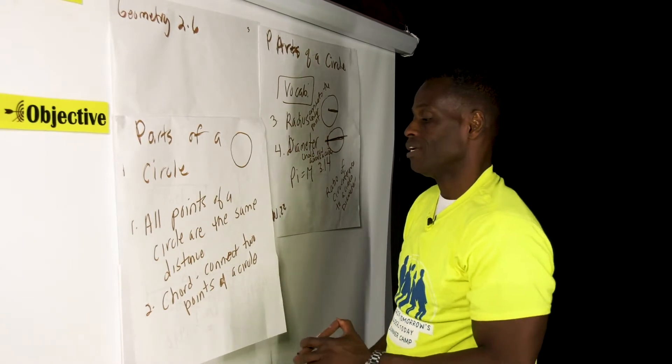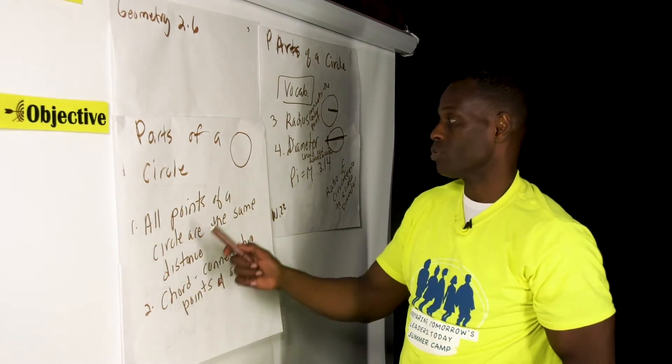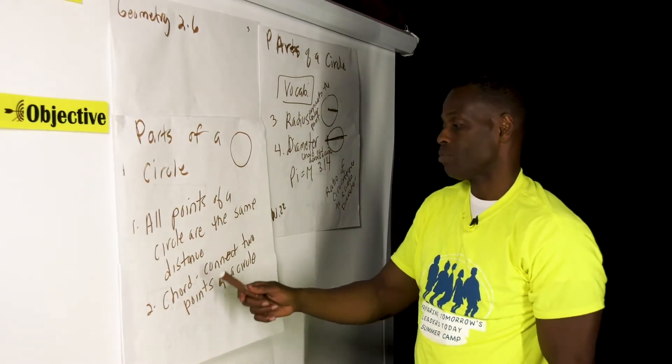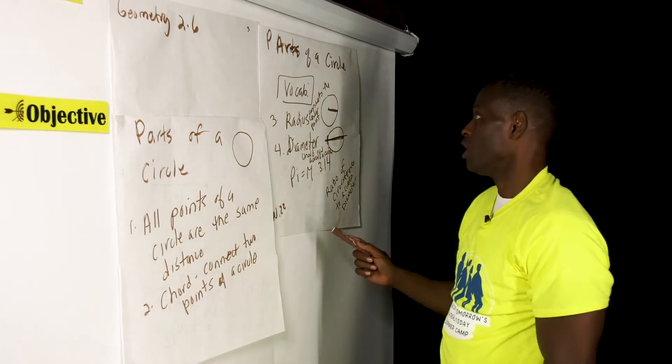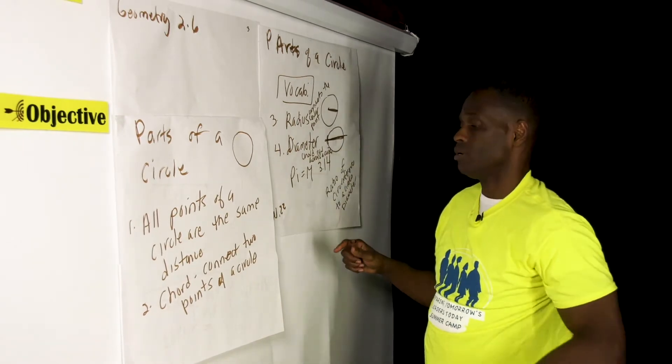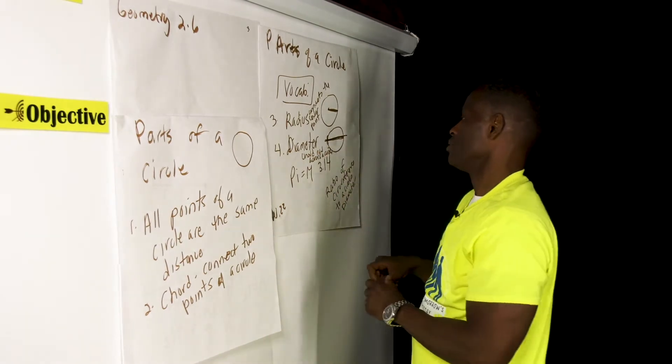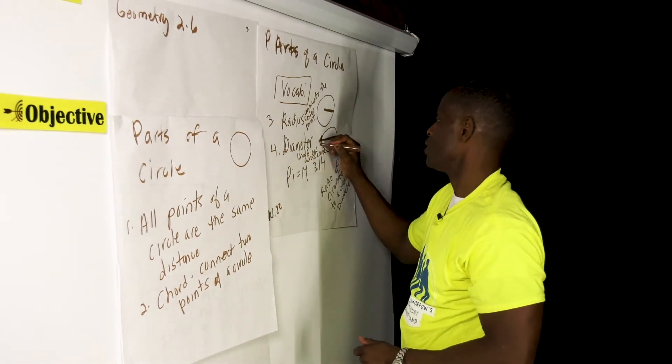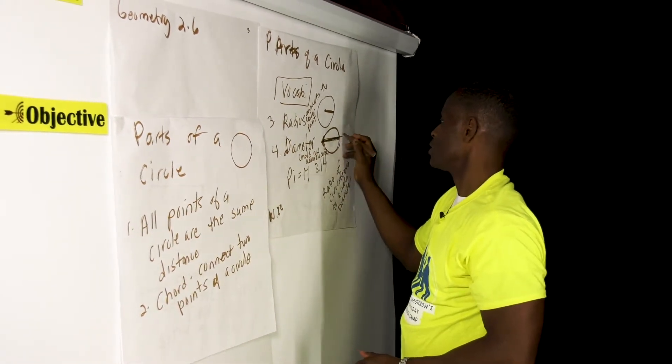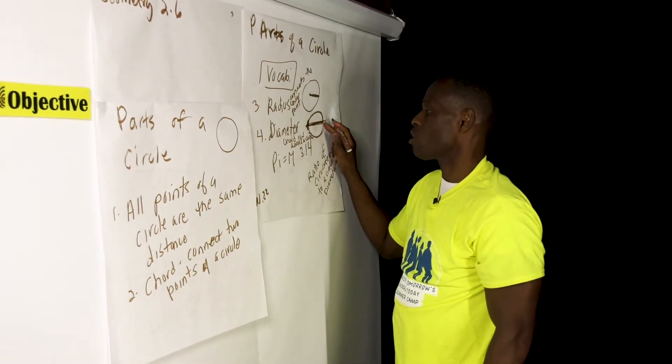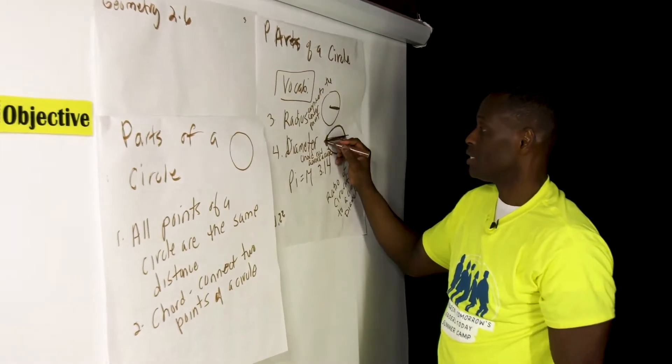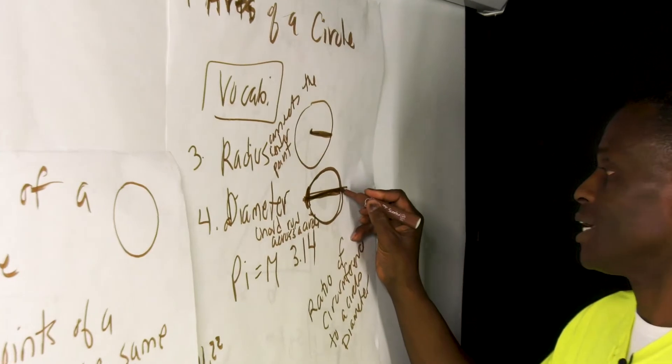A chord, another term, a chord connects two points of a circle. An example of a chord that will connect is a diameter. So from one end of a circle on the outside to the other outside, a diameter runs all the way across. And it's a chord that connects this side of a circle to that side. That's the diameter.